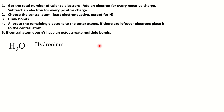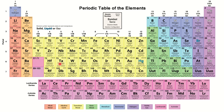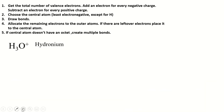Step one: we have to get the total number of valence electrons. We have the hydronium ion with a positive sign, so this is a cation. To find the number of valence electrons we identify the group number of the elements. Hydrogen belongs to group 1 and oxygen belongs to group 16.